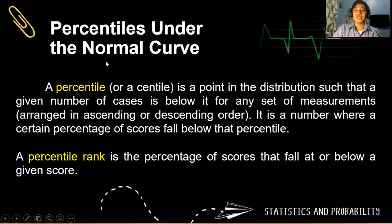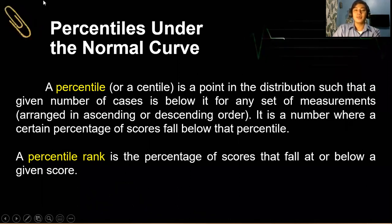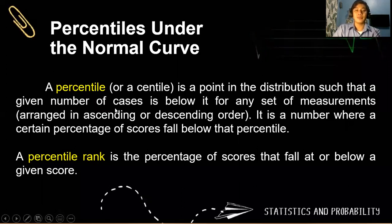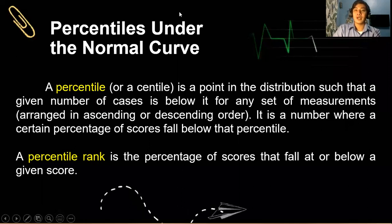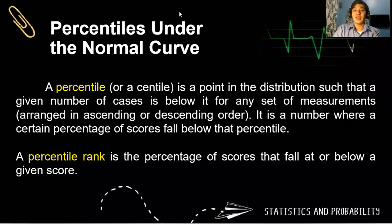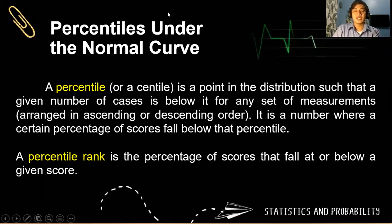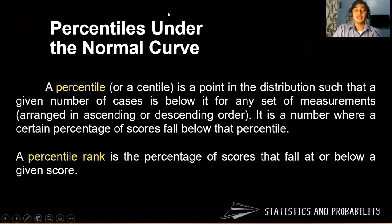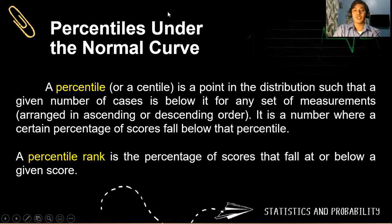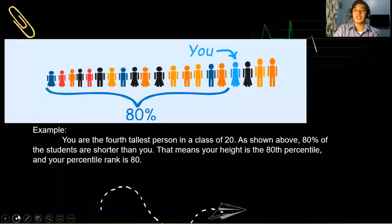So what are percentiles? Percentiles under the normal curve — from the word percent or centile — is a point in the distribution such that a given number of cases is below it for any set of measurements. Anything below a certain vertical line under the normal curve will be a percentile. The percentile was also discussed during your Grade 10 mathematics, covering quartile, decile, and percentile measurements, which are measures of position. A percentile rank is the percentage of scores that fall at or below a given score.